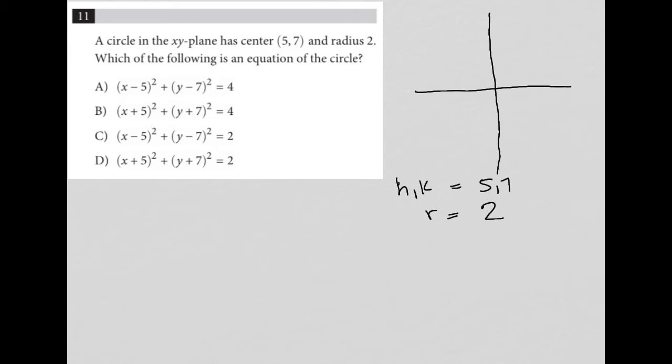Which of the following is an equation of the circle? Well, the equation for a circle is (x - h)² + (y - k)² = r². So this is definitely something worth memorizing. Not much on this test do I ask you to memorize, but this is definitely something worth memorizing.